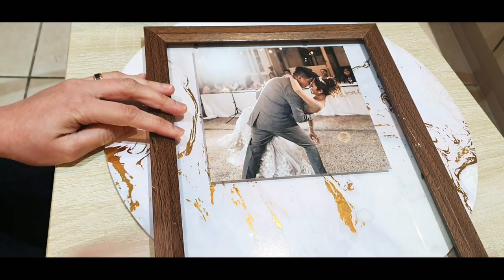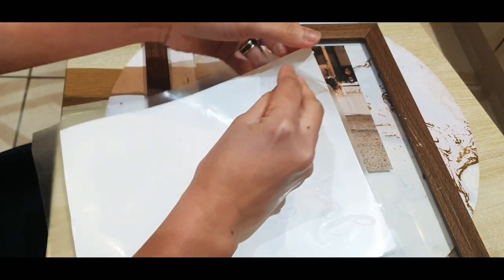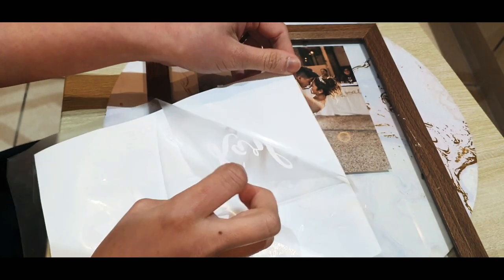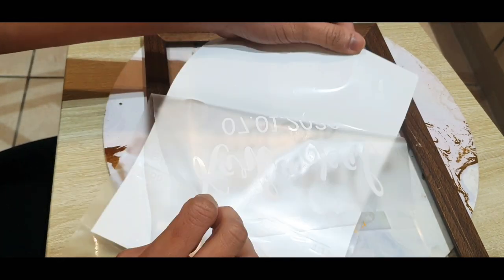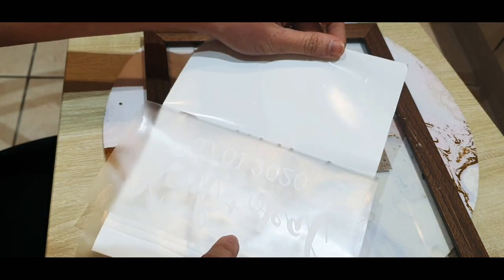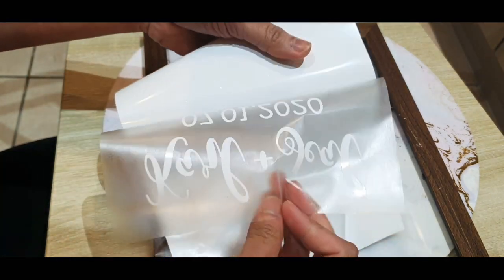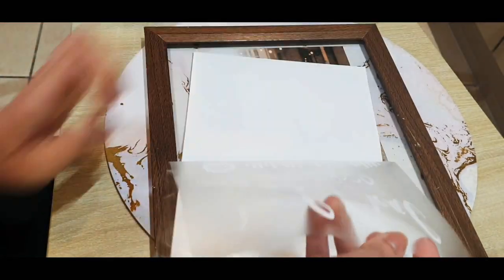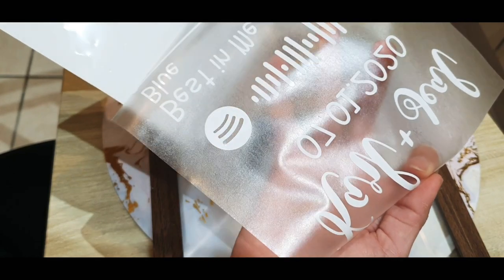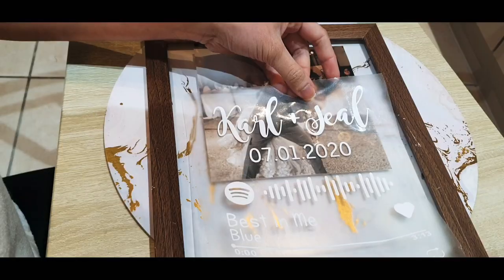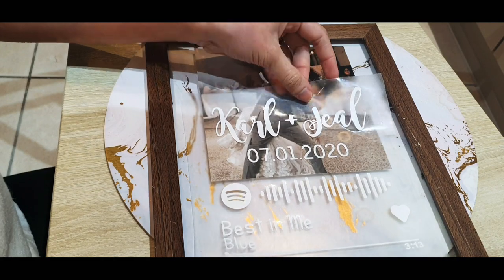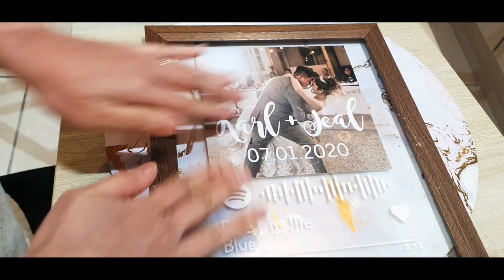Next step is to remove the transfer tape from the vinyl, from the back cover of the vinyl sheet, making sure that all your decals are stuck in the transfer tape. So for this one you have to be very patient. And then you can now apply the transfer tape with your decal onto the surface of the frame.